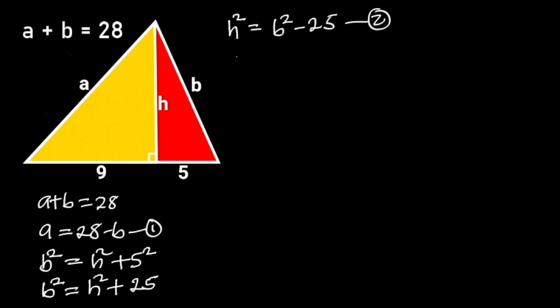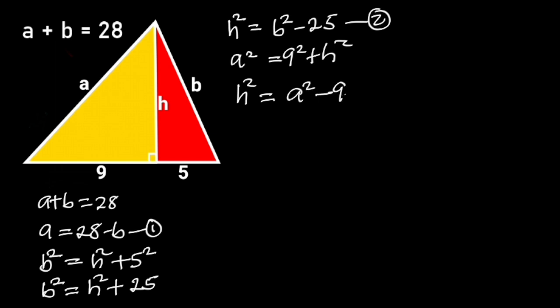Next, let's focus on the yellow triangle. The yellow triangle is also a right triangle. From Pythagoras' theorem, A squared is equal to 9 squared plus H squared. If we make H squared the subject formula, we will have H squared is equal to A squared minus 9 squared.